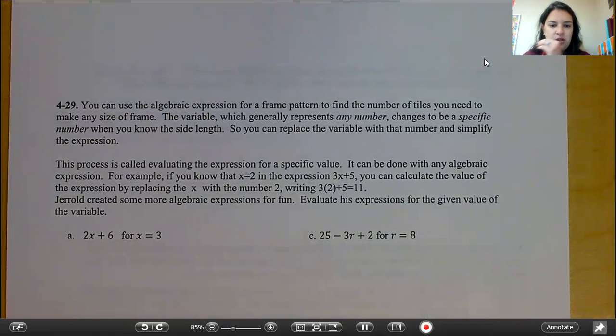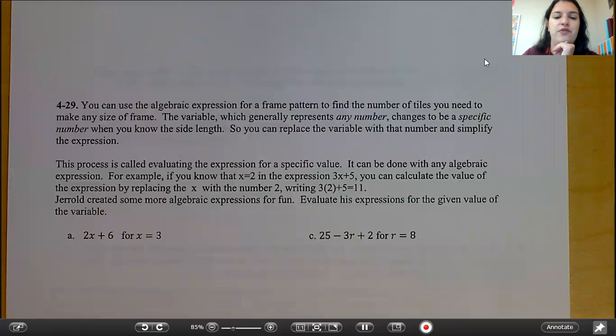How can you use algebraic expressions for a frame pattern to find any number of tiles you need to make any size of frame? The variable, which generally represents any number, changes to be a specific number when you know the side length. So you can replace the variable with that number and simplify the expression. This process is called evaluating the expression for a specific value. It can be done with any algebraic expression. For example, if you know that x equals 2 in the expression 3x plus 5, you can calculate the value of the expression by replacing the x with the number 2, writing 3 times 2 plus 5 equals 11. Gerald created some more algebraic expressions for fun. Evaluate his expressions for the given value of the variable.